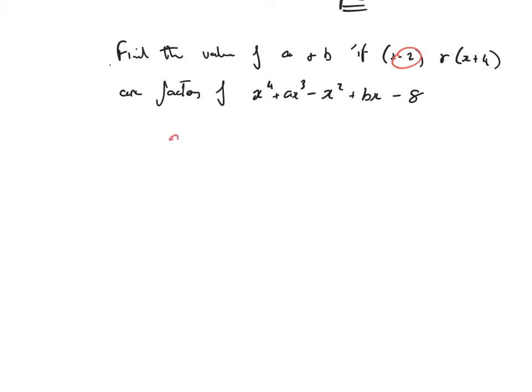Okay, so example 2. Find the values of a and b. If x minus 2 and x plus 4 are factors of x to the power 4 plus ax cubed minus x squared plus bx minus 8. Okay, so first of all, x minus 2 is a factor, so 2 goes up at the side. Okay, my coefficients then: 1, a, minus 1, b, minus 8.